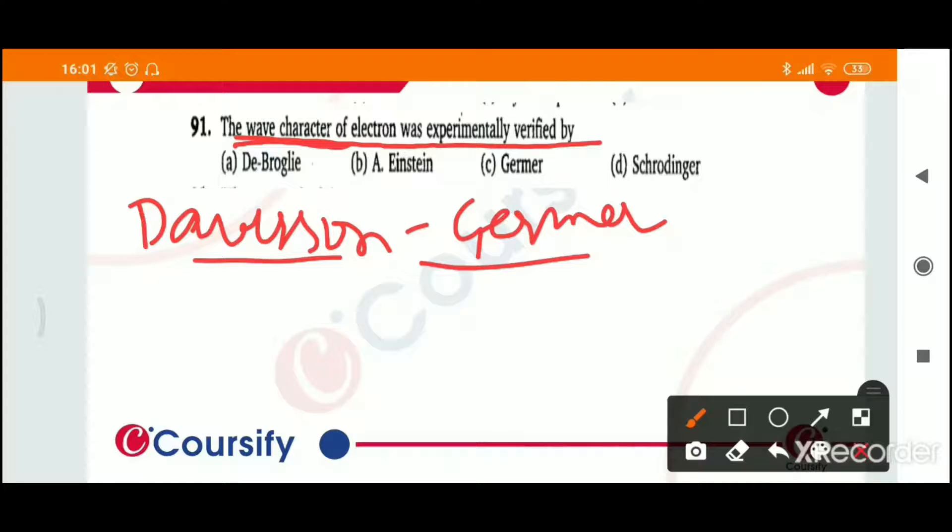इन दोनों ने ये experiment किया था और ये confirm किया था de Broglie hypothesis को कि matter जो होता है उसका wave-like behavior होता है. So Davison and Germer experiment confirmed the de Broglie hypothesis that matter has wave-like behavior.